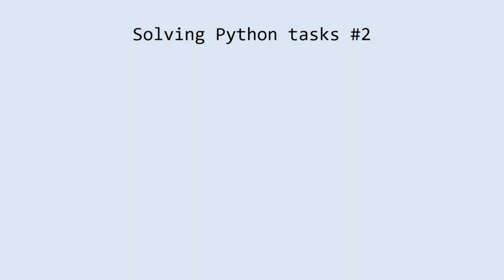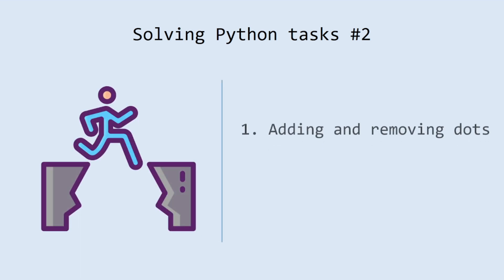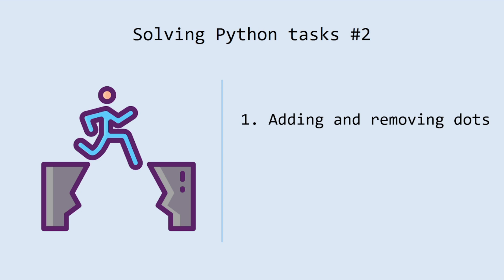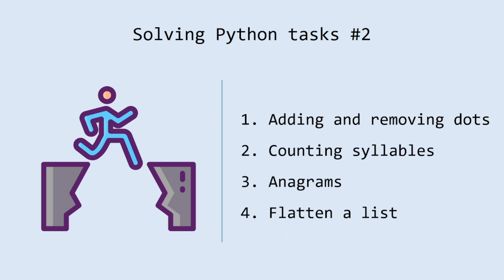Hello everybody! Today is the second episode of Python Exercises for Beginners and Others. We are going to solve four challenges. The first one is adding and removing dots. The second is counting syllables. Next is anagrams. And the last one is flatten a list.